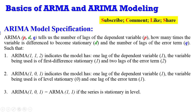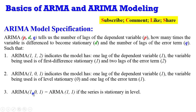ARIMA is specified as (P, D, Q): P tells you the number of lags of the dependent variable, D tells you the number of times the variable has been integrated before becoming stationary, and Q tells you the number of lags for the MA process. For example, ARIMA(1,1,2) uses one AR lag, is first-difference stationary, and has two MA lags. An ARIMA(1,0,1) equals ARMA(1,1) because the series is level stationary.